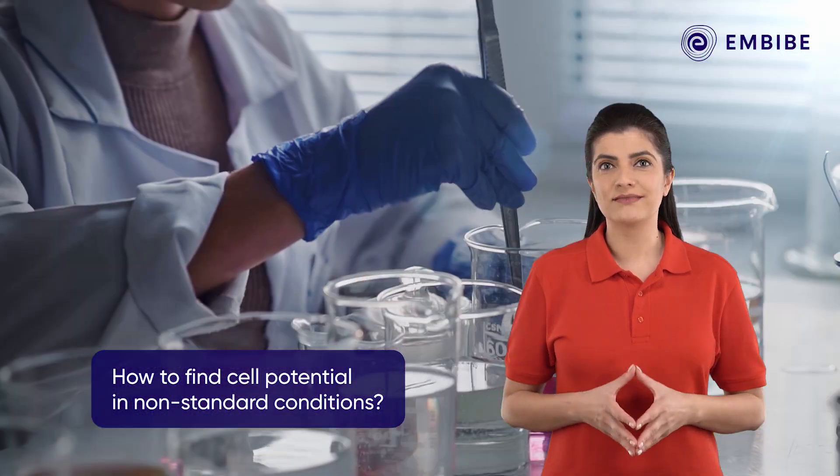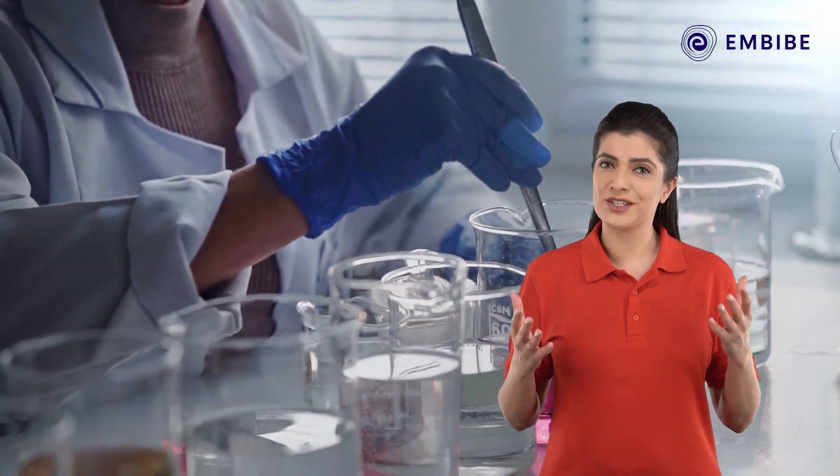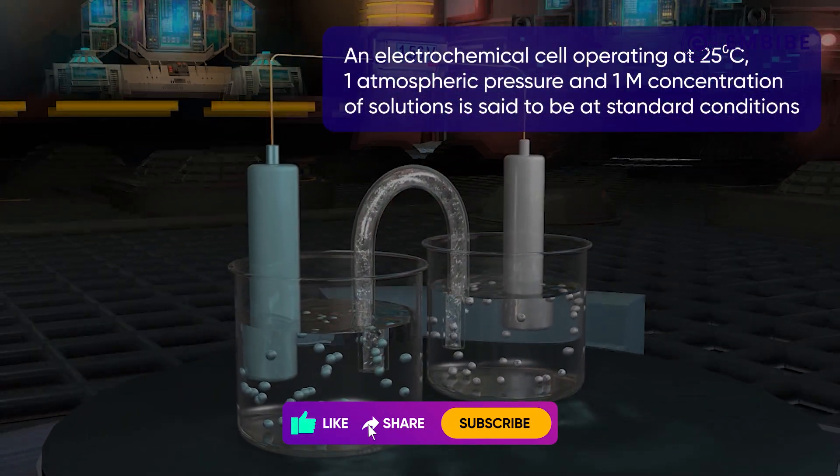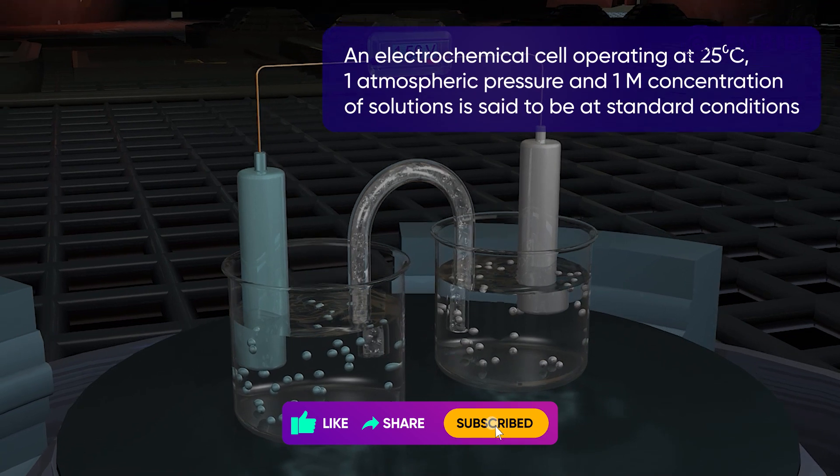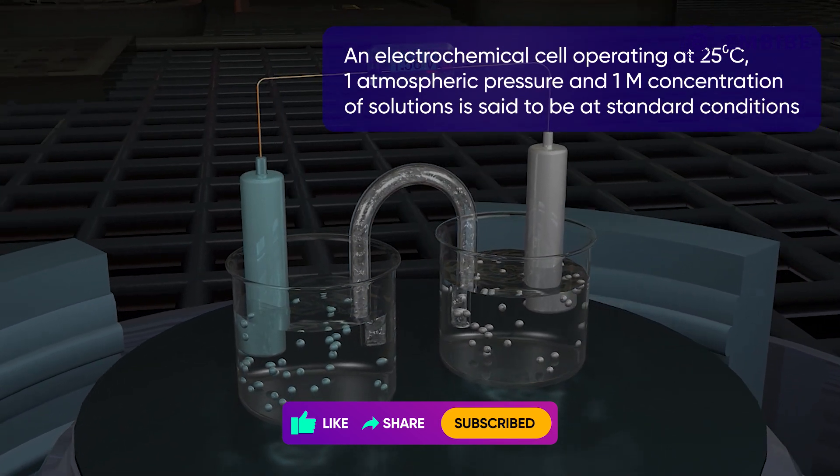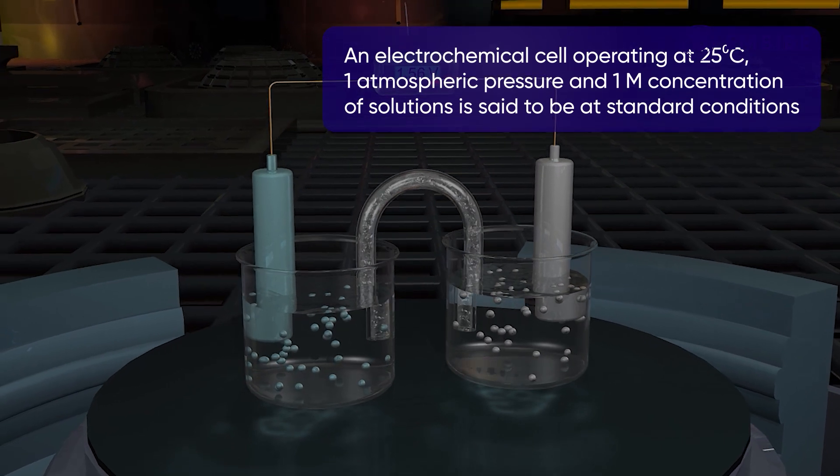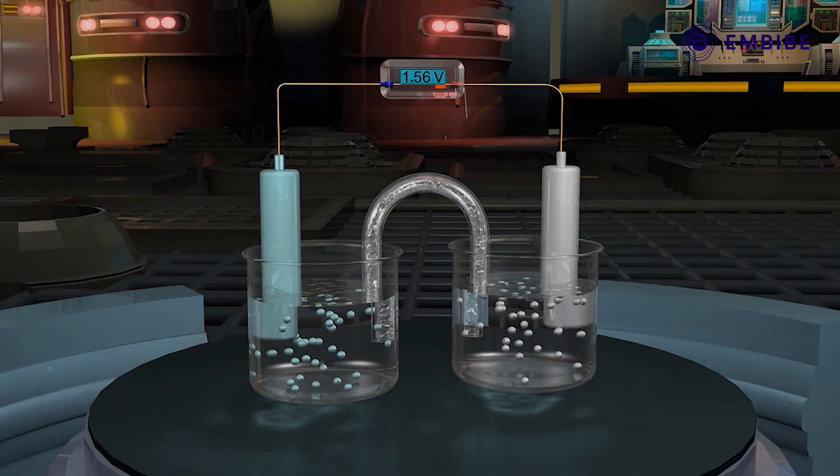Let's dive into the content to learn more. An electrochemical cell operating at 25 degrees Celsius temperature, one atmospheric pressure, and one molar concentration of solutions is said to be at standard conditions. A change in any of these conditions will result in non-standard conditions.